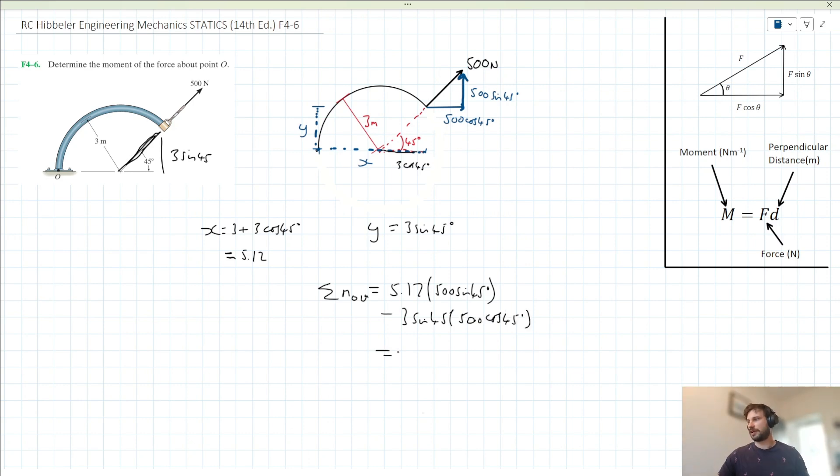And when we put that into our calculator, that gets us a value of 1060.6 newton meters, which we can simplify down to 1.06 kilo newton meters. And that's our solution there.